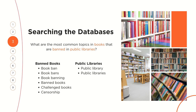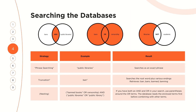So let's say we're interested in book bannings in public libraries. We'll start by brainstorming some keywords. We could use broad terms like book bans, or very specific terms like examples of titles that we know have been banned, or even synonymous terms like censorship. Once we've identified our keywords, we can use a few strategies to make our search more efficient.